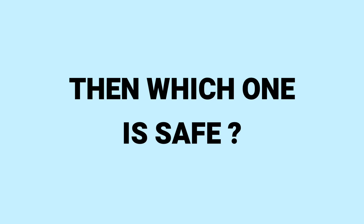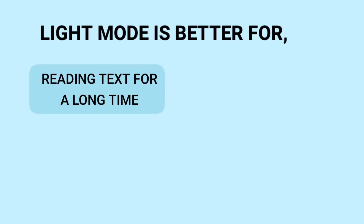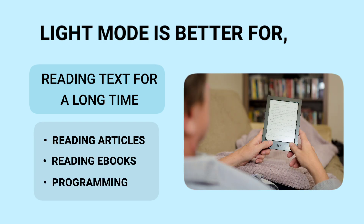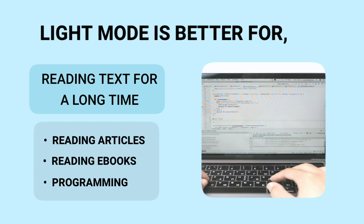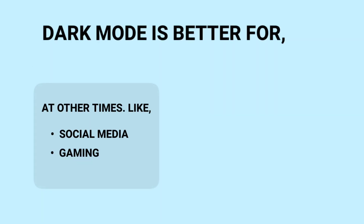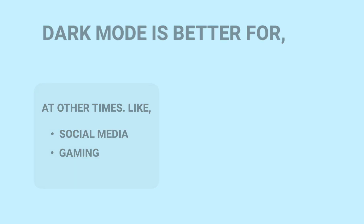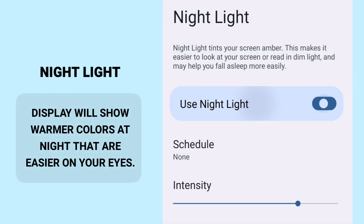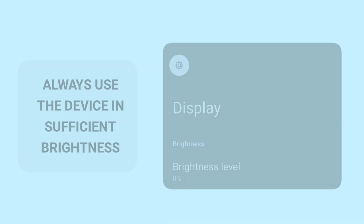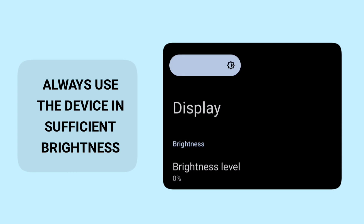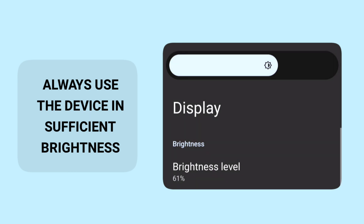So which one is safe? When you have to read text for a long time — like reading articles, e-books, programming, etc. — light mode will be better for your eyes. Other times you can use dark mode as well. If you want to save your eyes, you can use night mode and always make sure to use the device at sufficient brightness.